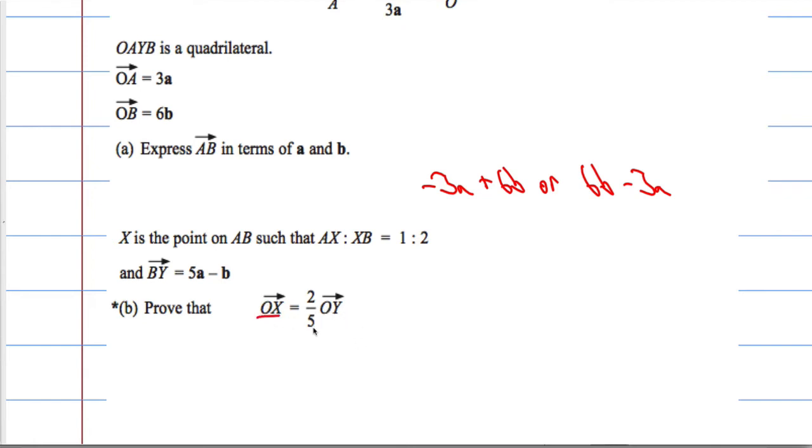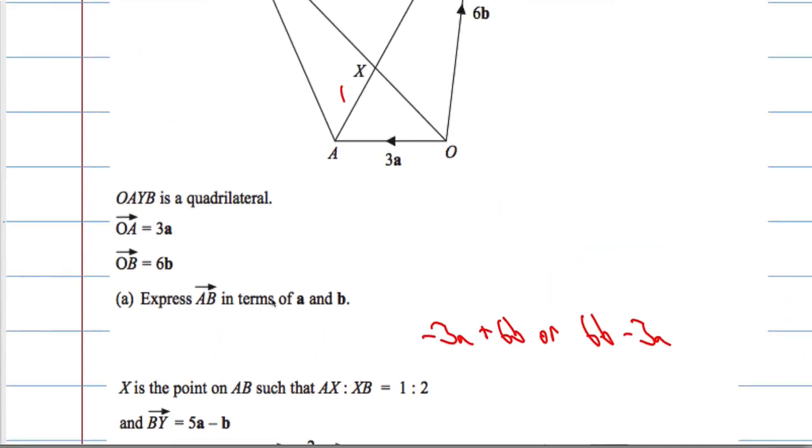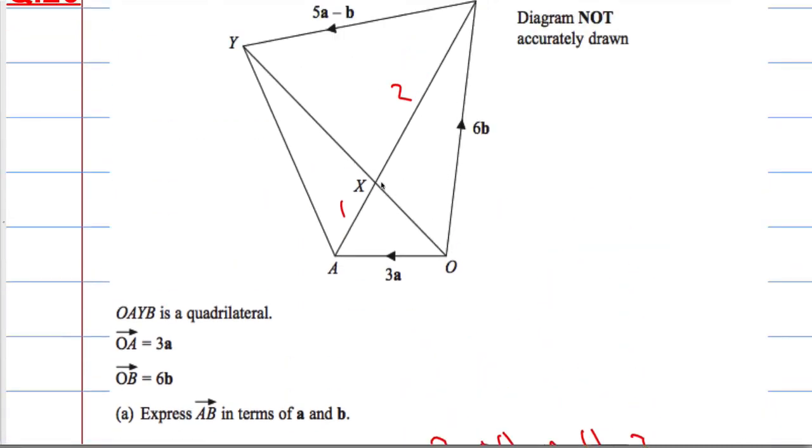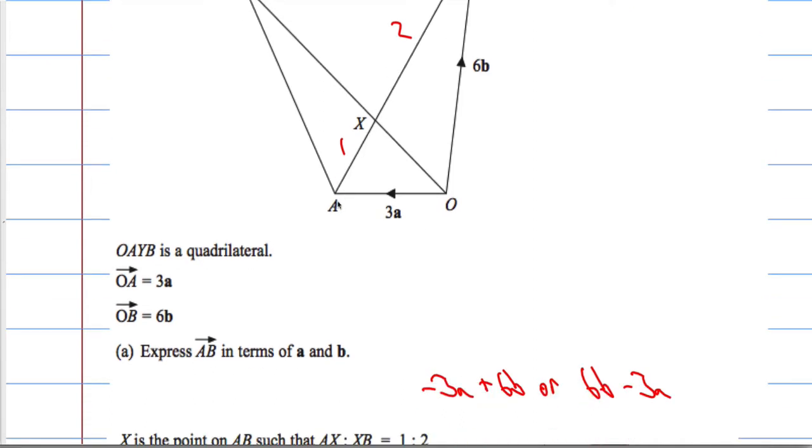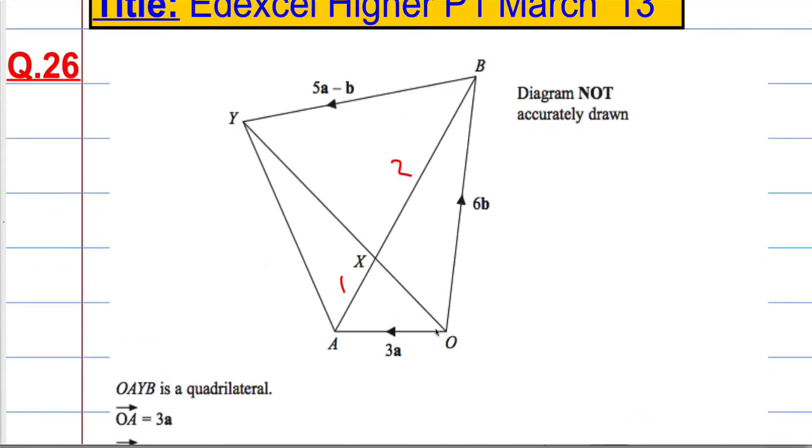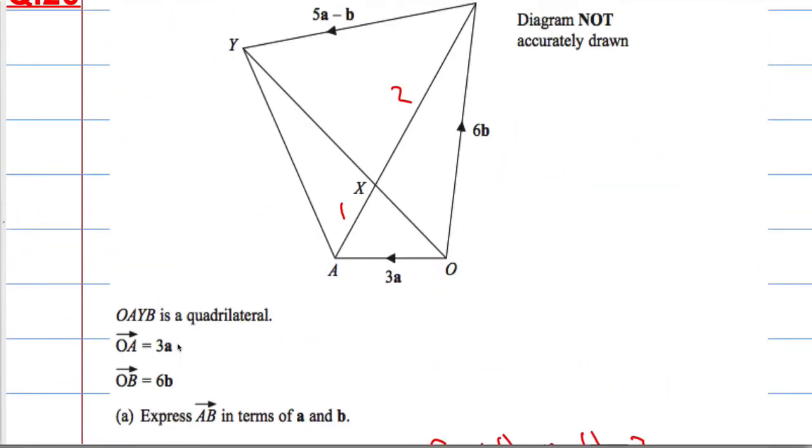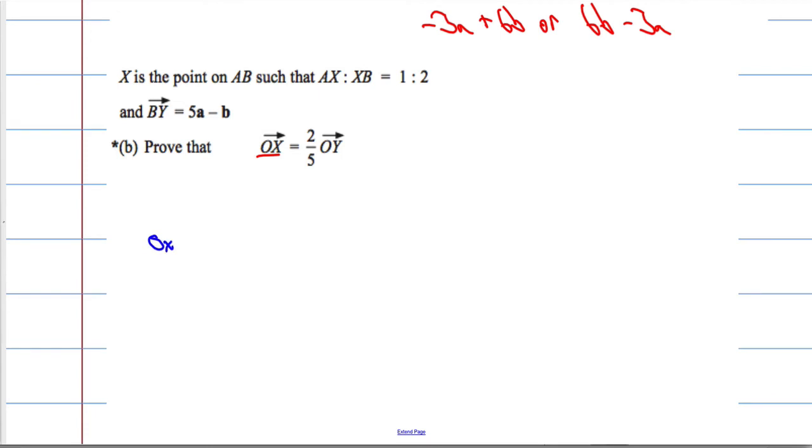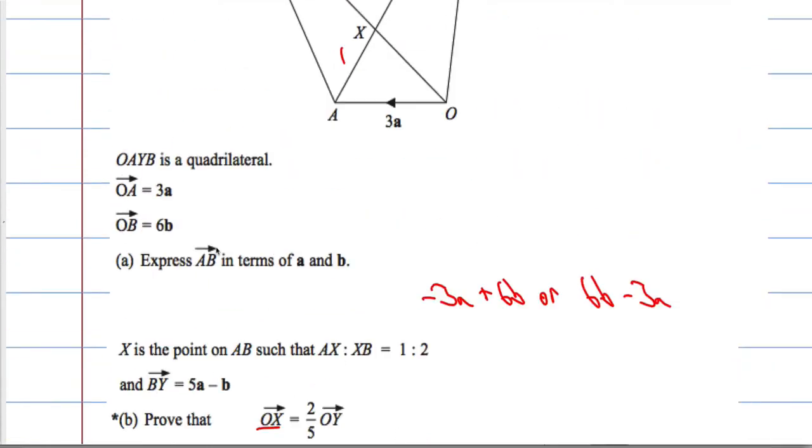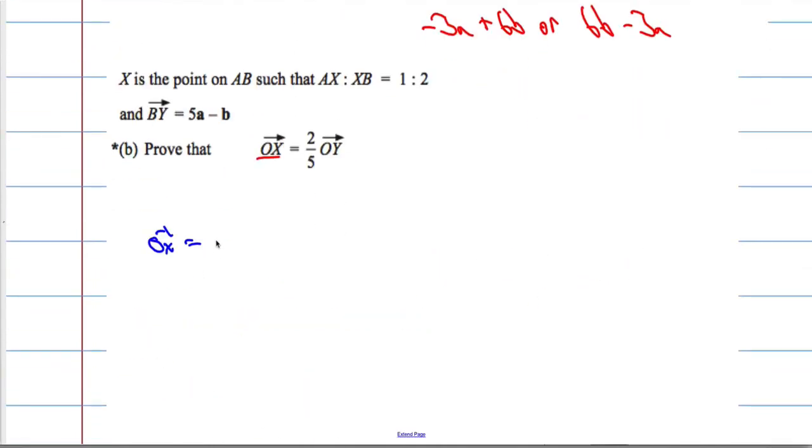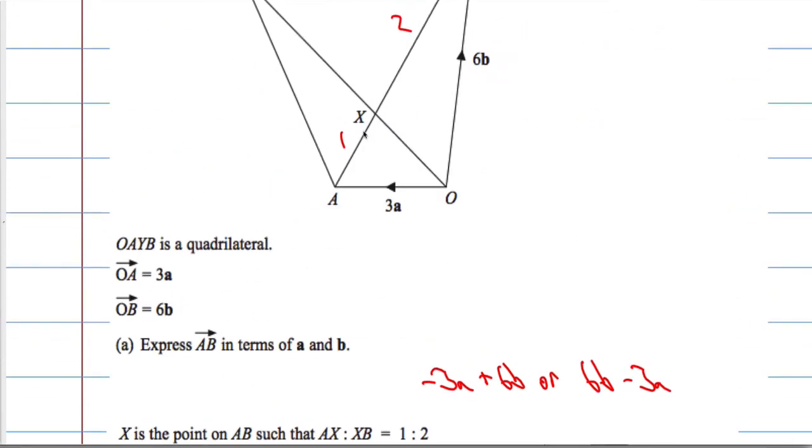So really what I want to work out first is what is the vector OX. So, OX, I want this vector here. Now, I already know what this vector is here. We've worked that out. That is 6b minus 3a. So OX is the same as OA plus AX.